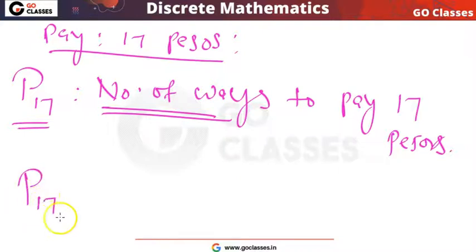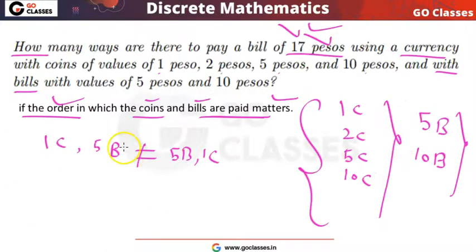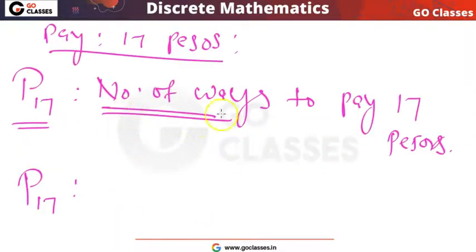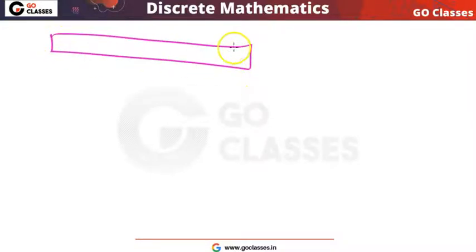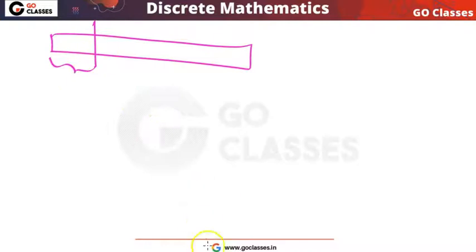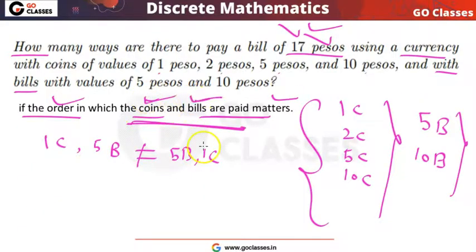So what will P17 be? Notice that it matters in which order you are paying — in which order the coins and bills are paid, that matters. To find how many ways there are to pay 17 pesos, think about what is the first currency you are paying.